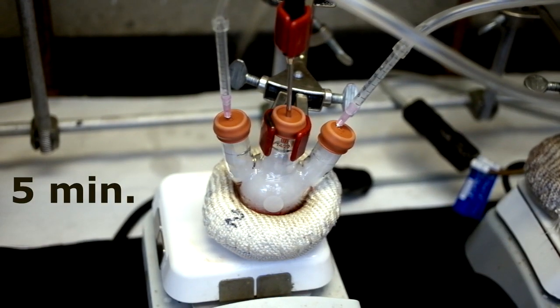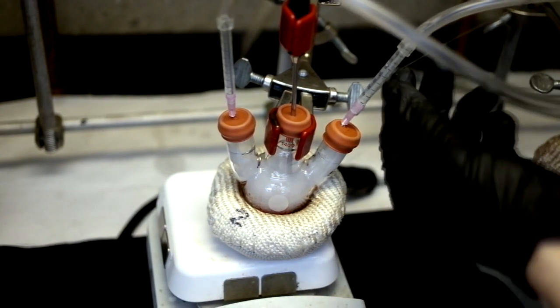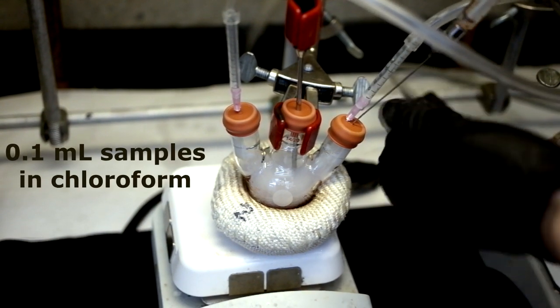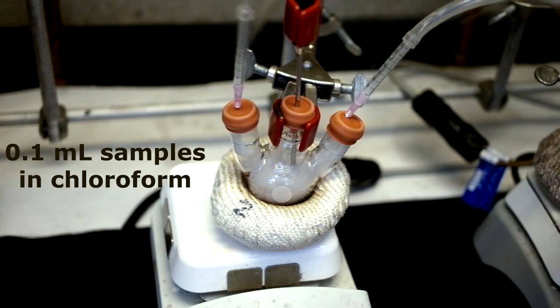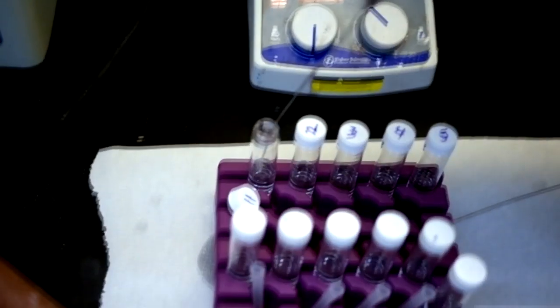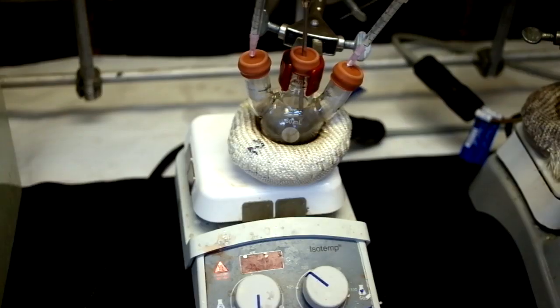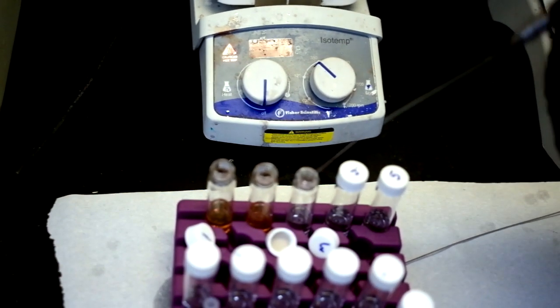Start a stopwatch for 5 minutes and immediately begin drawing samples. Use a glass syringe to draw approximately 0.1 ml samples of the reaction material, placing it into a collection flask full of chloroform. Continue taking samples throughout the reaction.